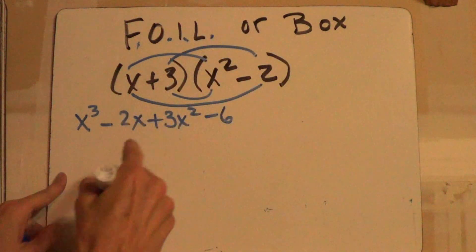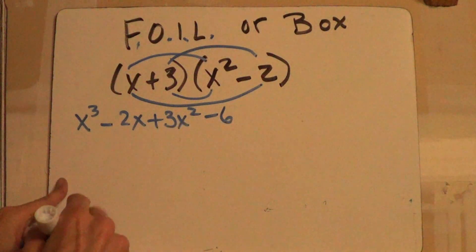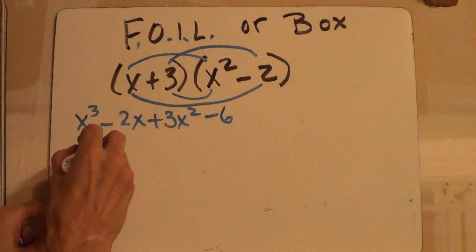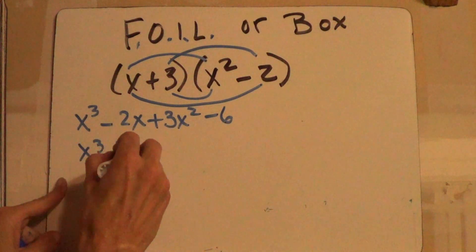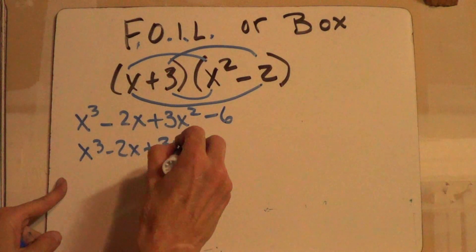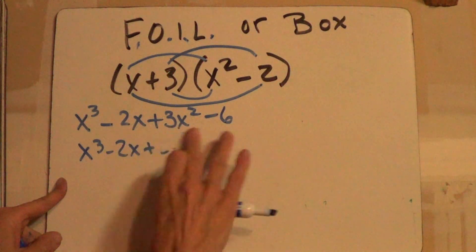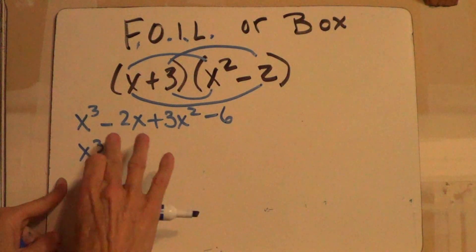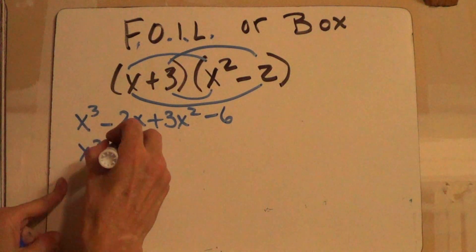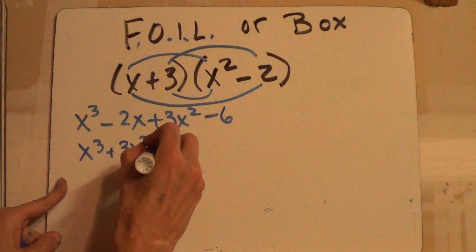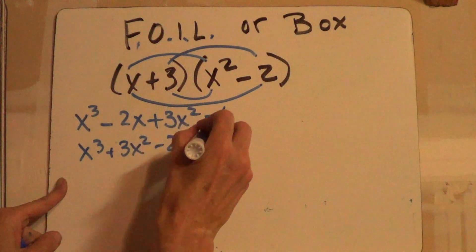Now you put them in order, descending exponents, so it would be x cubed, minus 2x, plus 3x squared. Oh, sorry. Hello. Plus 3x squared, minus 2x, minus 6.